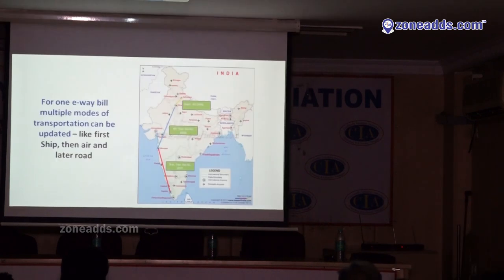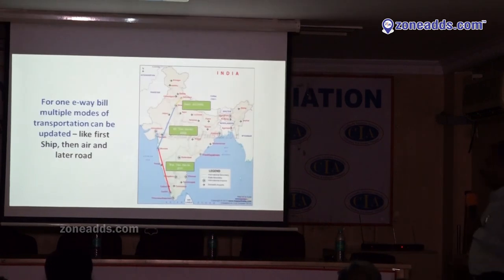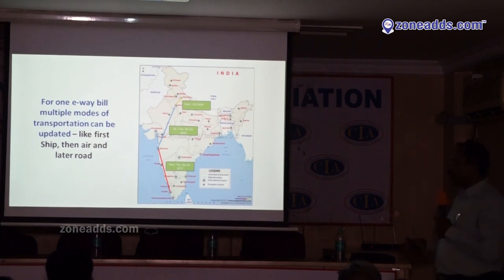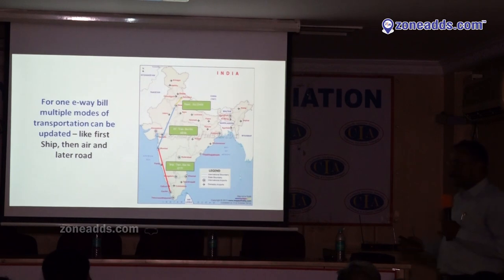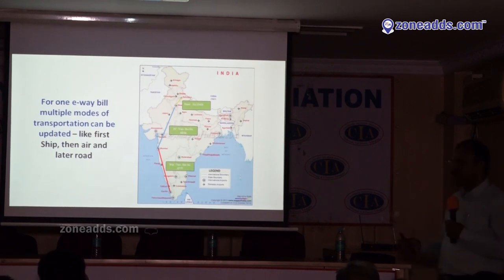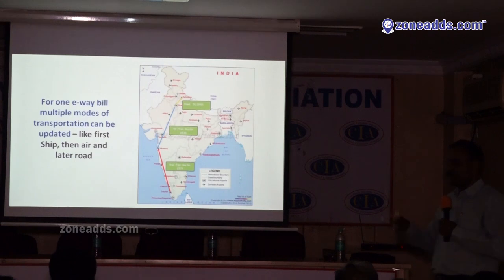General point: on a single E-way bill, multiple modes of transportation can be used — truck, ship, train, and aeroplane. You only have to update the data each time. Once the transporter logs in, he can see which E-way bills have been assigned to him. There is an option called 'update vehicle number' where he enters his GSTN number to know all E-way bills assigned to him.